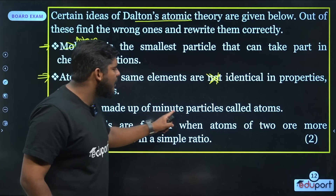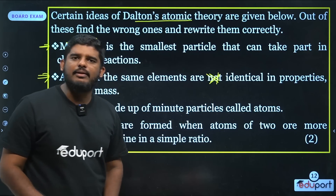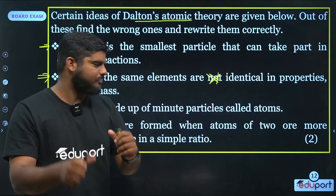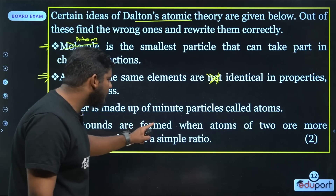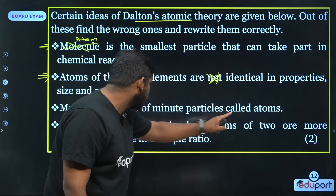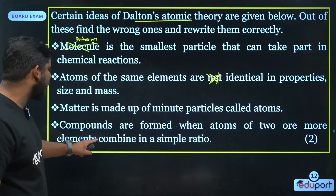Matter is made up of small particles called atoms. Compounds are formed when atoms of two or more elements combine.